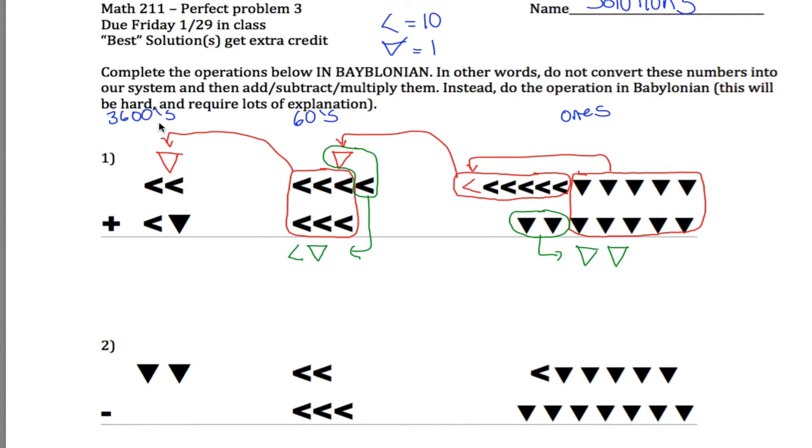What I'm left with in my 60s spot is 11, which in Babylonian, I can kind of write like this. Now I got to worry about my 3600s place. Well, nothing too interesting going on here because nothing carries. So I just take all this stuff and kind of add it down. I have two of these 1s symbols. And then I have three of these less than symbols or chevrons. And this right here will be my answer.